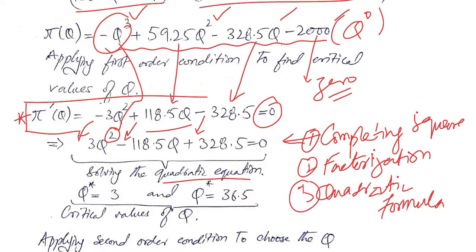These are the three methods we can use to find the answers. There will be 2 roots — a first root and a second root — because it is a quadratic equation. We know that the profit can be maximized at one of these values and minimized at the other. So we have to figure out if the profit is maximized at an output of 3 or an output of 36.5. These are both the critical values of q.